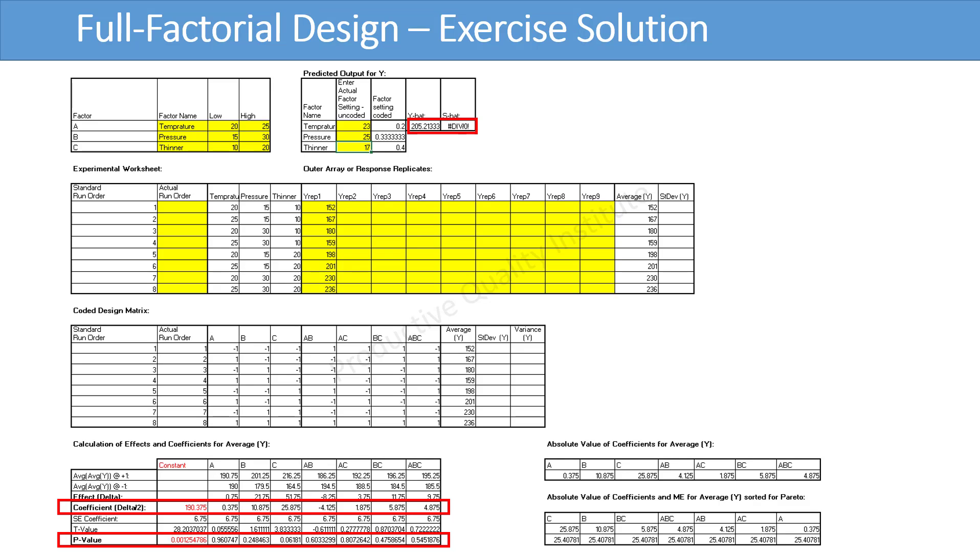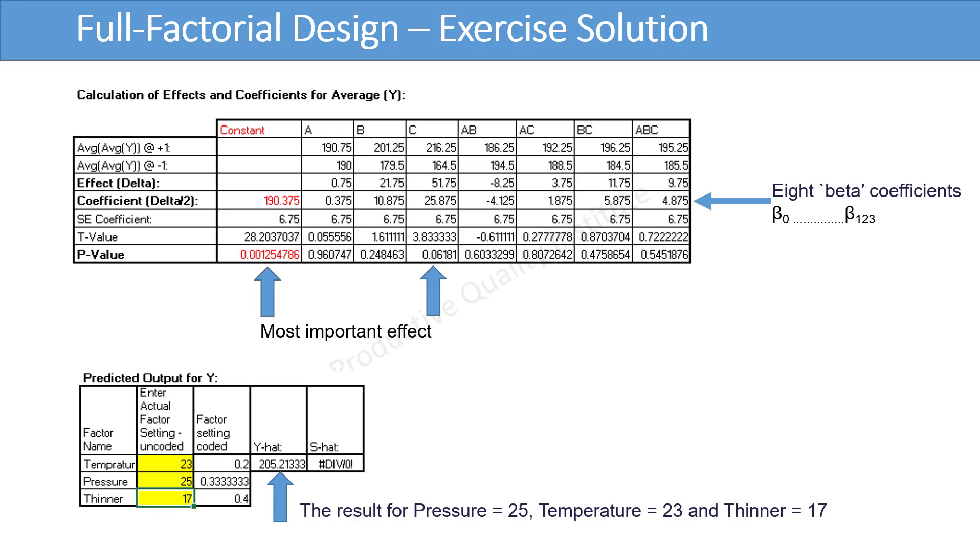Please check the solution of the exercise and compare it with your solution. The 8 beta coefficients are shown in the table. The most important effects are the constant and the thinner. The result for pressure equals 25, temperature equals 23 and thinner equals 17 is 205.21.